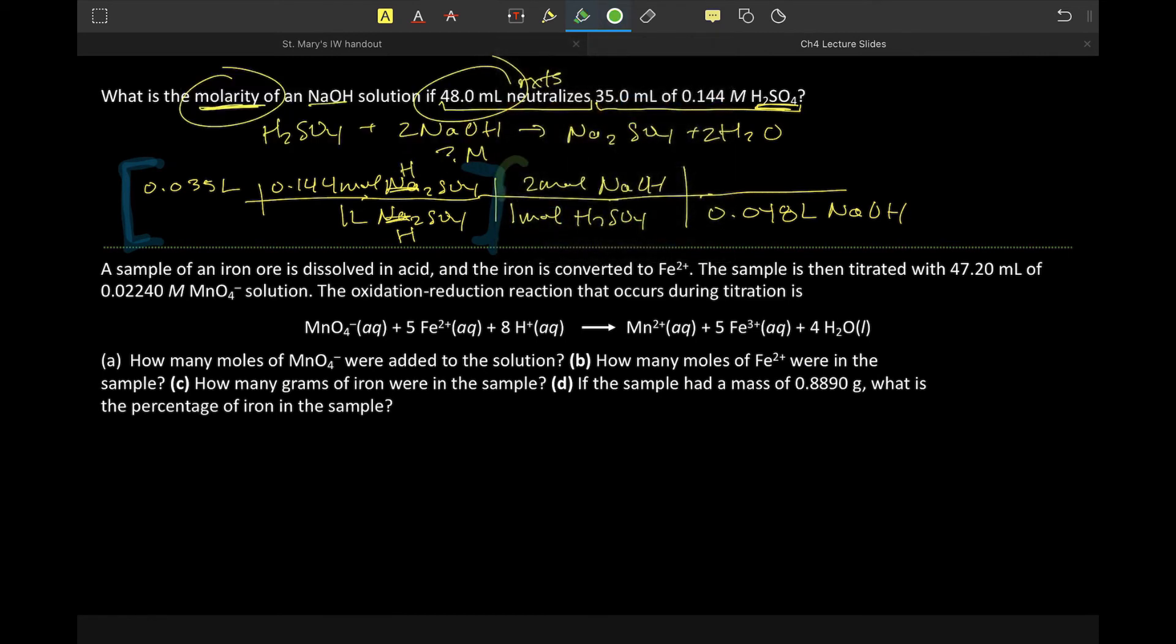Then next step is we would take our mole ratio, and that mole ratio allows us to convert that moles of known into moles of unknown, being this. And then finally, we, in this case, used the volume of that unknown to come up with the molarity. Does that make sense? All right, which then brings us to the second problem.